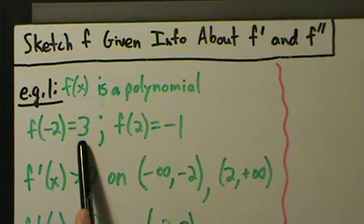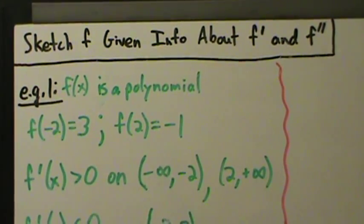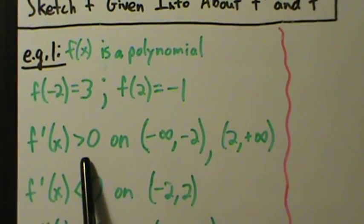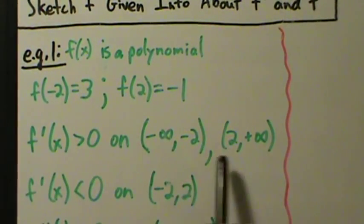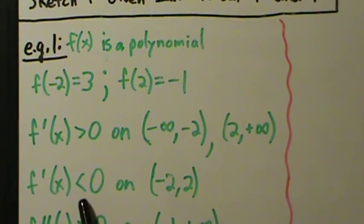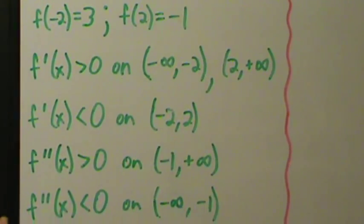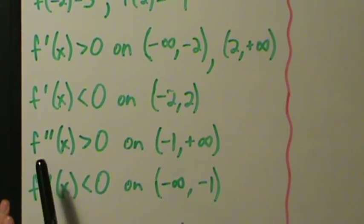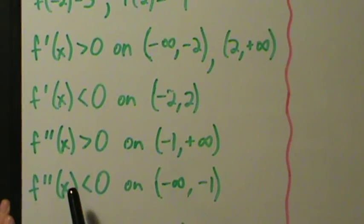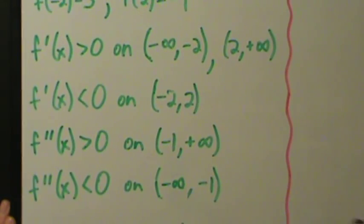We're given f(-2) = 3 and f(2) = -1. We're also given that f' is positive on the two intervals negative infinity to -2 and 2 to infinity, and f' is negative on the interval from -2 to 2. For the second derivative: f'' is positive on -1 to infinity, and f'' is negative on negative infinity to -1.